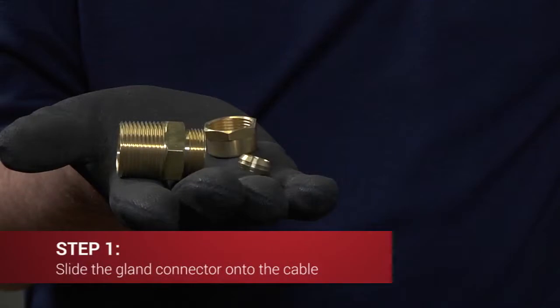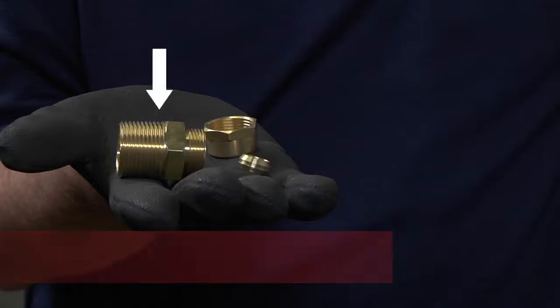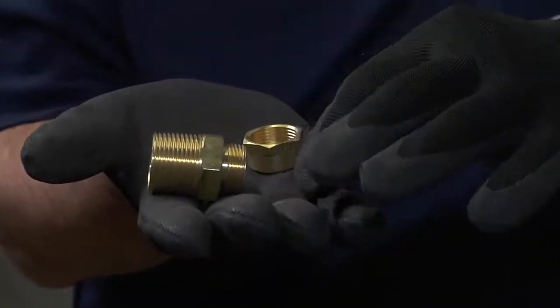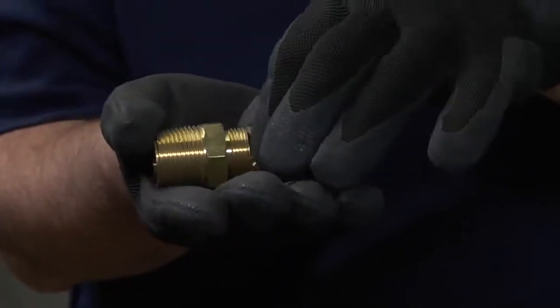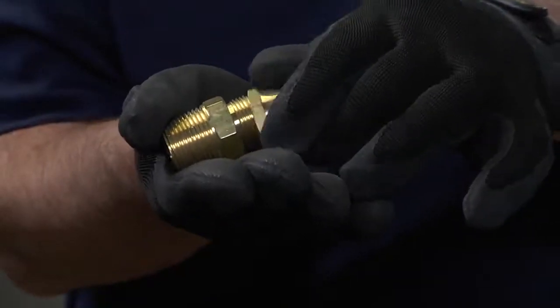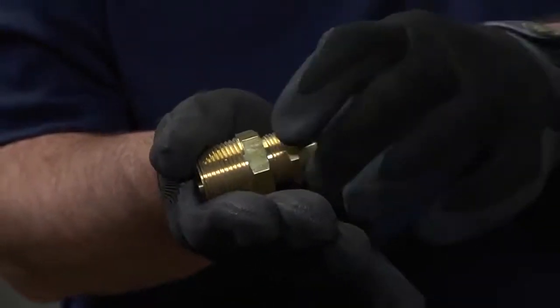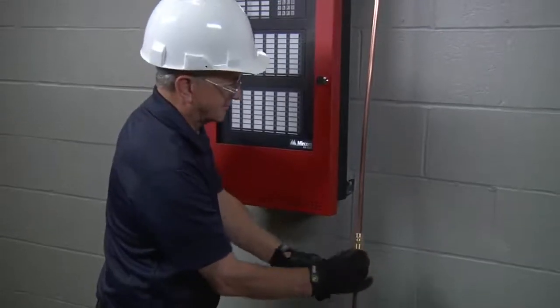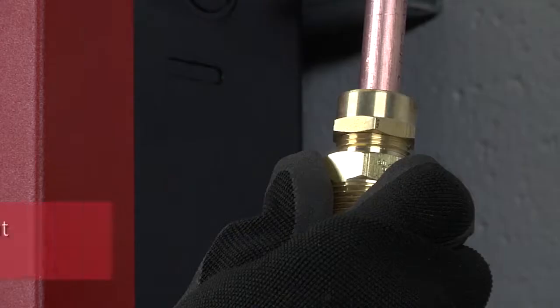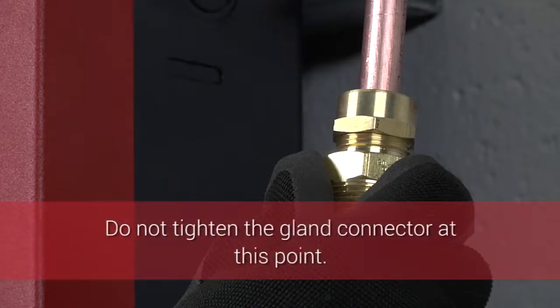The gland connector is an assembly which consists of three parts: the gland nut, the compression sleeve, and the gland body. For correct installation, the gland nut is placed first, followed by the compression sleeve, and finally the gland body. It's easier to place the gland connector on the cable with all the pieces assembled. Do not tighten the gland connector at this point.